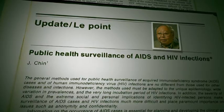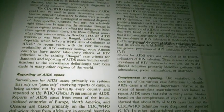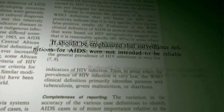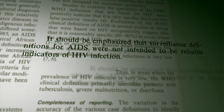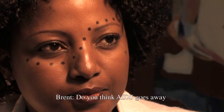The Bangui definition is a clinical definition — that's not perfect. People could have TB and not have HIV and fulfill the Bangui criteria: they'd lose weight, they'd have TB, and they could look like they have AIDS when they don't. In a World Health Organization publication, Dr. Chin writes: it should be emphasized that the surveillance definitions for AIDS were not intended to be reliable indicators of HIV infection. Do you think AIDS goes away if poverty goes away? Absolutely. You take away poverty, you're giving people an ability to fight infections.